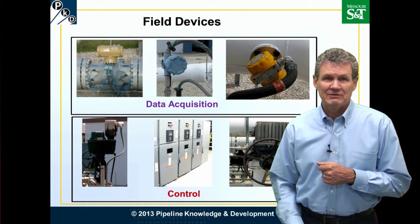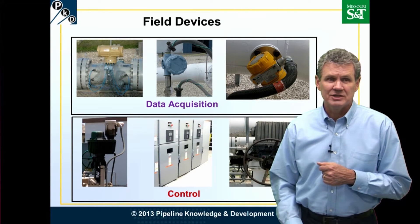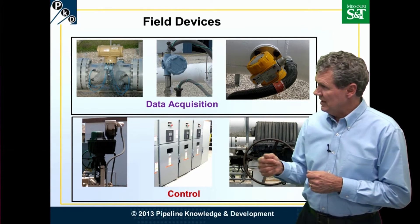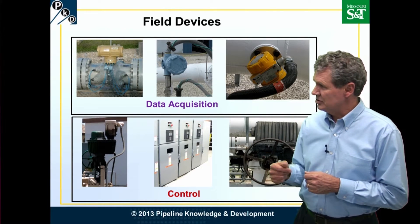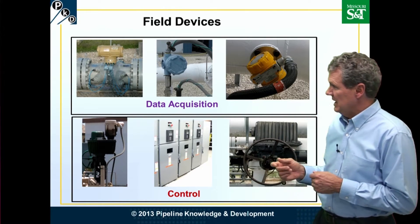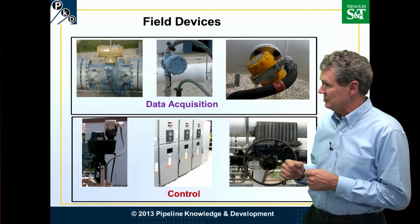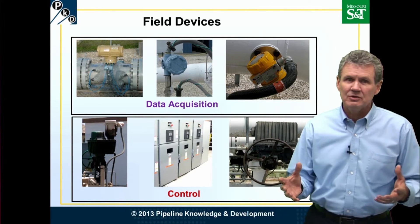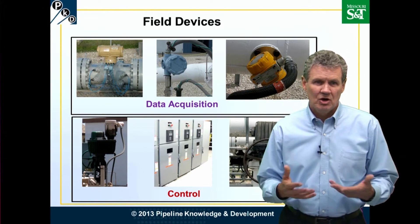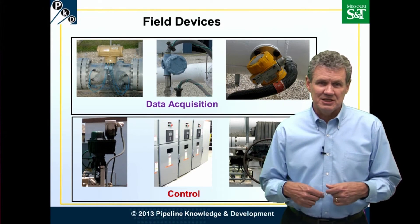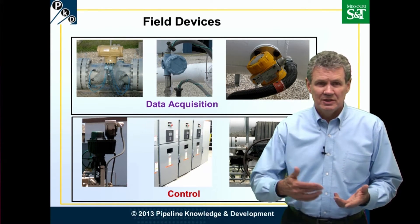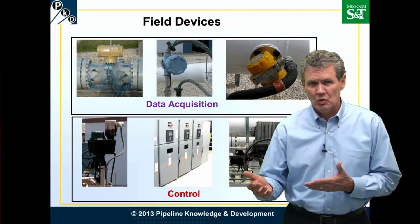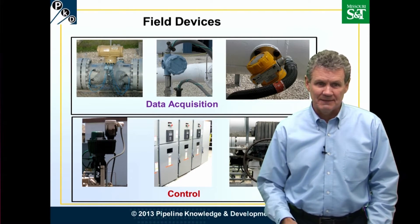You can also have smart devices that are causing things to happen. Going left to right, we have a control valve, motor starters, and then an electrical motor operator on top of a valve. So field devices generically are these pieces of equipment located out in the field that are generating information or making the pipeline do something.